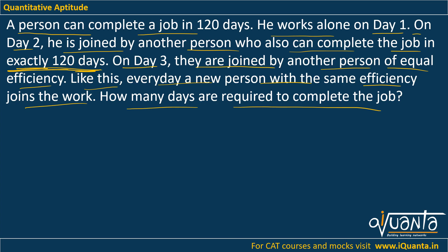Everything is related to efficiency here. Let me assume that the efficiency of a single man is x units per day. We know that a person can complete a job in 120 days, so total work will be equal to man into days: 120 into x, which gives us 120x units.